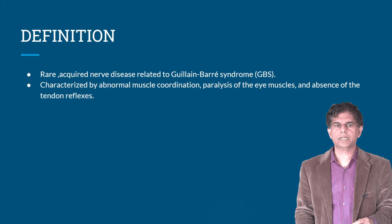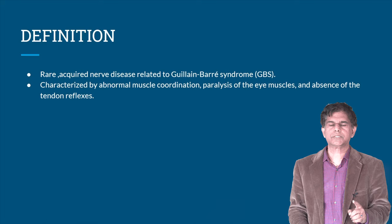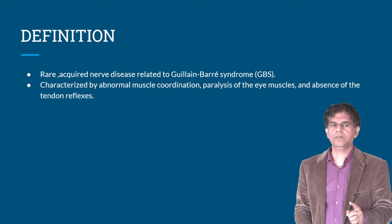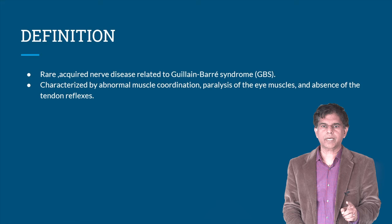What is the definition of Miller-Fisher Syndrome? It's a rare acquired disease related to Guillain-Barré Syndrome. The characterizing features include abnormal muscle coordination, paralysis of the eye muscles, and absence of tendon reflexes.